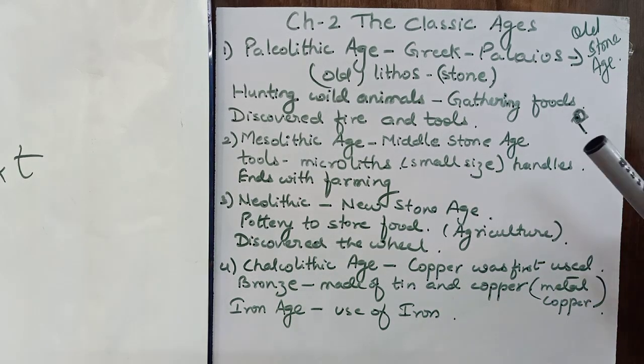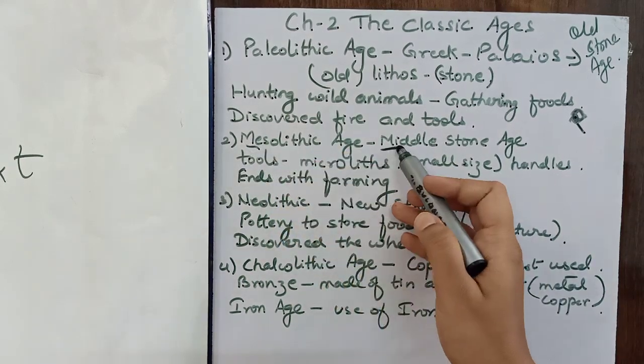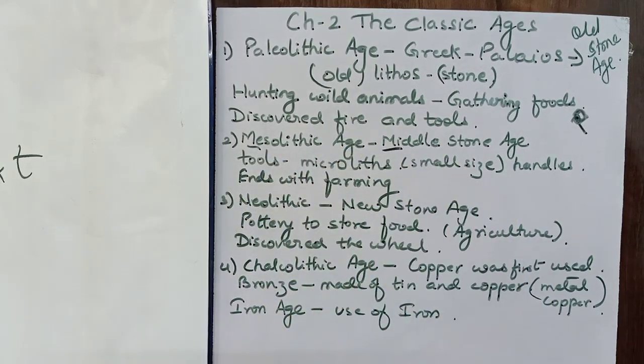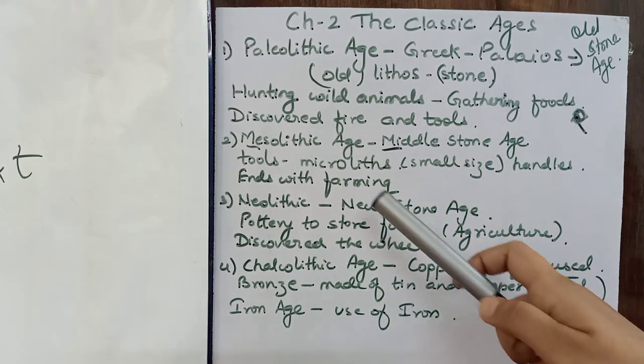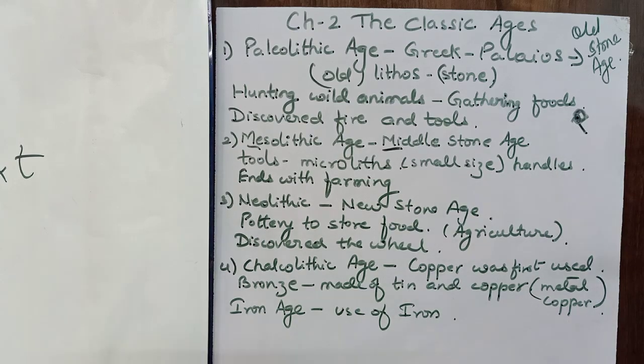Next, if we talk about Mesolithic age. In Mesolithic age, you will see M. M is called Middle Stone Age. What do we call Old Stone Age? Paleolithic. What do we call Mesolithic age? Middle Stone Age.